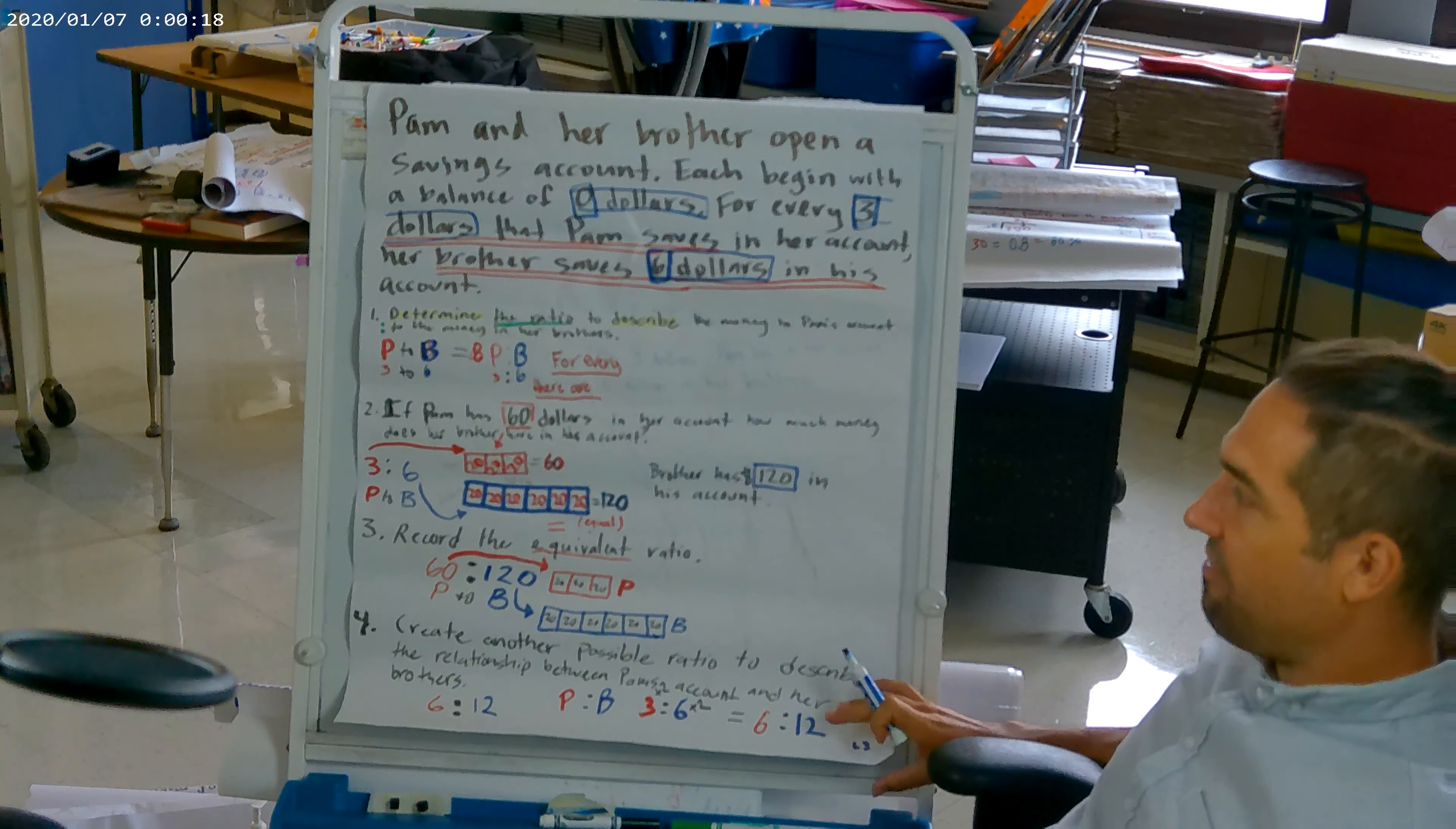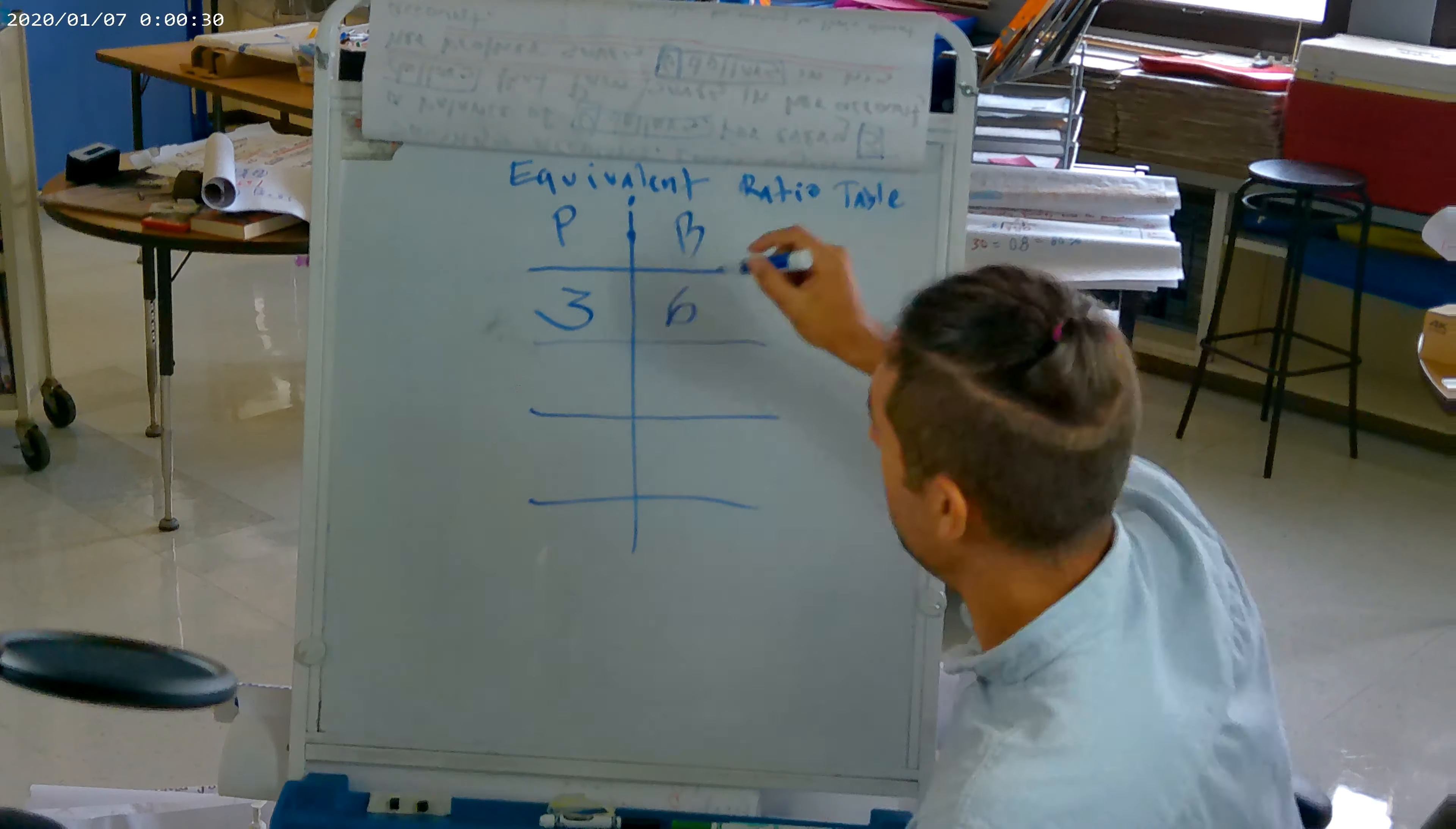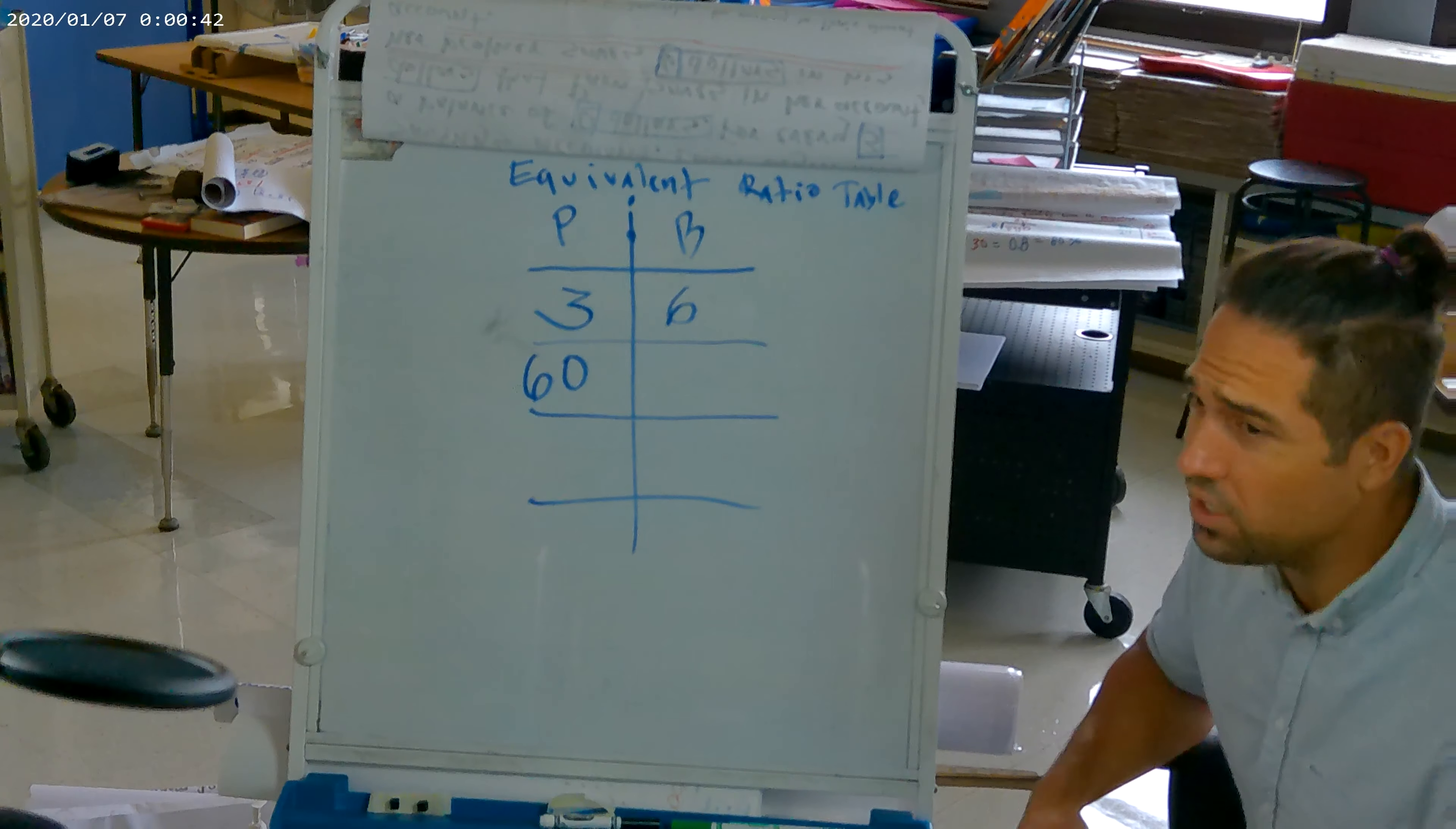How much do we have on the brother side of things? What is the quantity for the brother? Six. We got six for the brother. So we're going to go ahead and get the six down here. And now we are showing that 3 to 6 ratio that it wanted us to describe in question number one. And so we already have that information, it told us all of that. Then it gives us another value. What's that other value that it gives us? 60. And who is that for? Pam. So now Pam has 60.